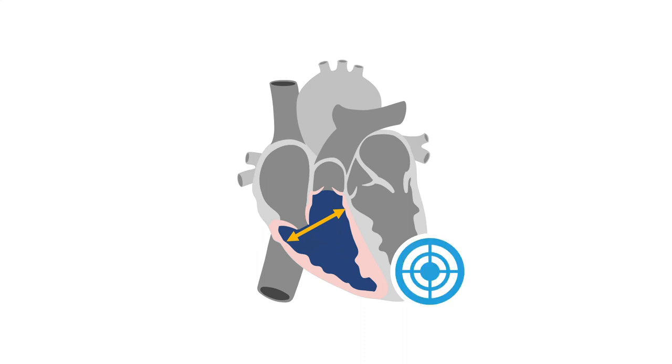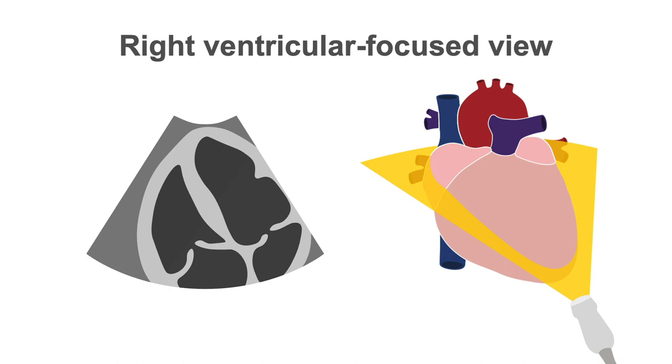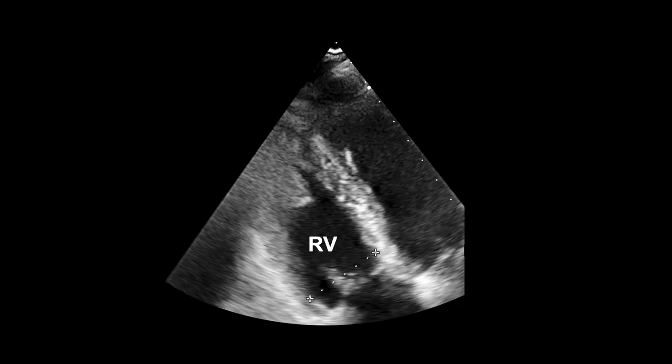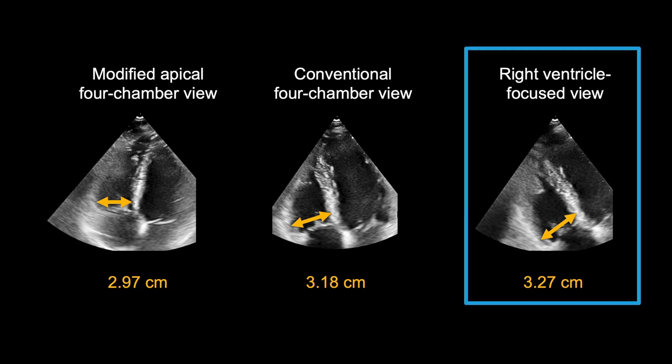If you want to image the most accurate diameter of the right ventricle, you should do a right ventricle focused view where you get the four-chamber view and slowly rotate the probe to obtain the maximal right ventricle diameter. The right ventricle diameter measures 3.27 cm. If you look at the diameter acquired by each view, the measurement of the linear dimensions vary. The most accurate measure of the right ventricle diameter is acquired from the right ventricular-focused four-chamber view.